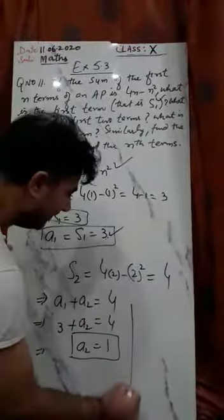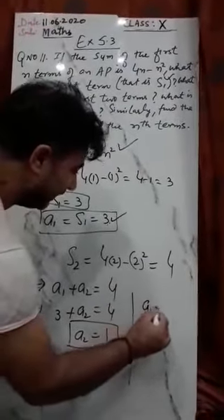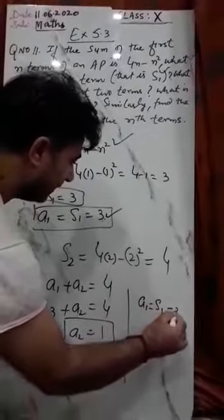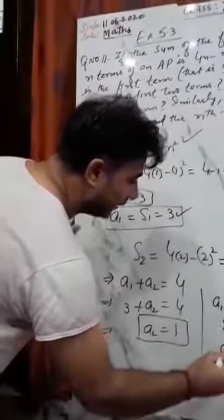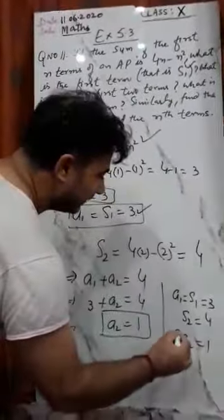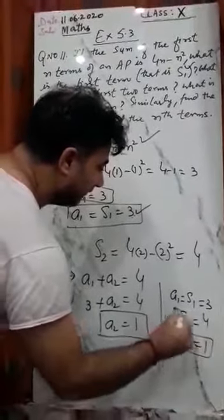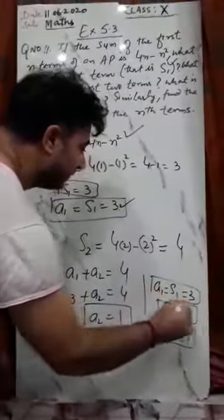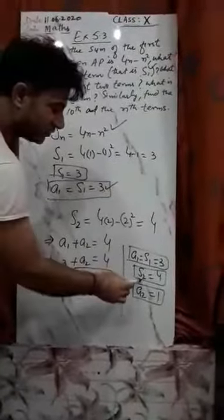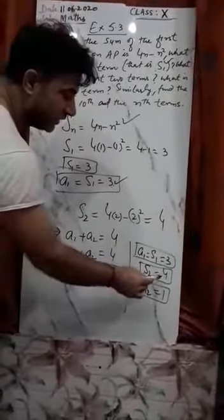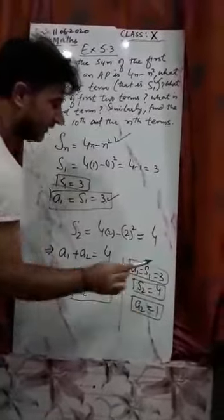So far we have found three things: A1 = S1 = 3, S2 = sum of first 2 terms = 4, and the second term A2 = 1. Now we will similarly find the 3rd term.